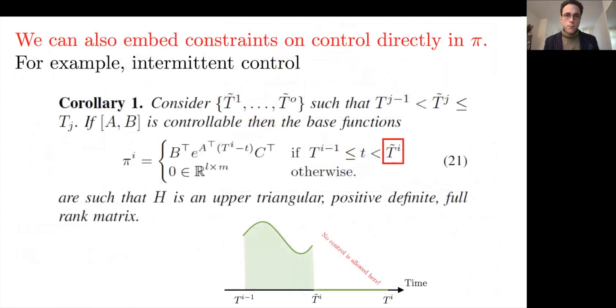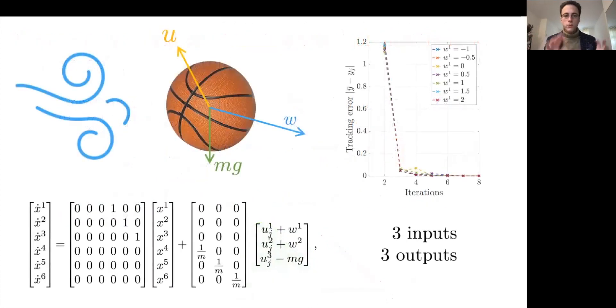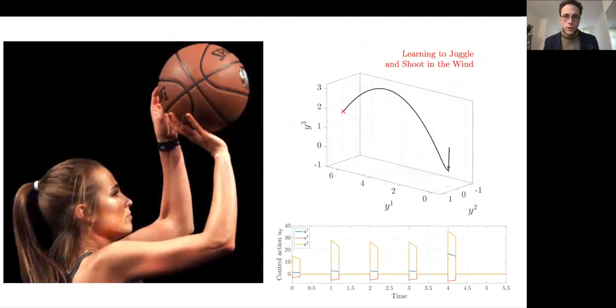But even more, what you can do is embed some constraints on the control directly in the selection of pi. We present only an example of that in the paper, which is to implement intermittent control. This results in a similar structure as before, but this time which is different than zero only in the desired interval. And to showcase what this means, we consider a basketball environment to go back to the initial motivation, in the wind, under a strong wind, under gravity. And we want to learn how to do three juggles and then a shoot to a position at a precise time. But we can do that only when we have the ball in our hand. We cannot follow the ball while it goes up and down. And so we have to use some intermittent control strategy to do that. And this is where it converges after only eight iterations. This is the control action that it converges to, and you can see the evolution in Cartesian coordinates of the ball.